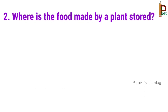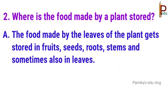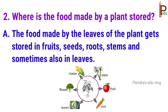Second one: where is the food made by a plant stored? Answer: the food made by the leaves of the plant gets stored in fruits, seeds, roots, stems, and sometimes also in leaves.